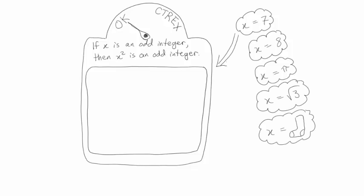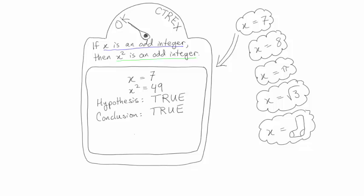Now let's use our little machine. Let's put in 7. In this case, x equals 7 and x squared is 49. The hypothesis, underlined in blue, is x is an odd integer. For this example, this is true. The conclusion, underlined in green, is x squared is an odd integer. For this example, this is also true. Since we obtained true, true, the machine reports OK.